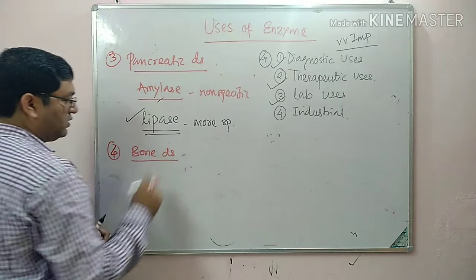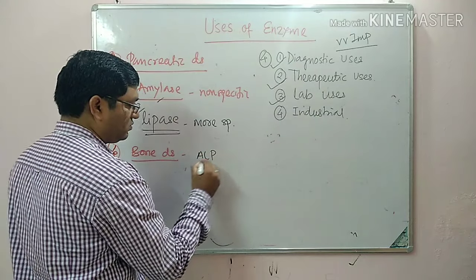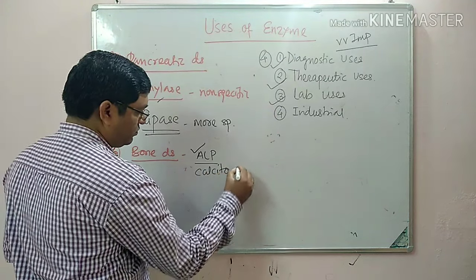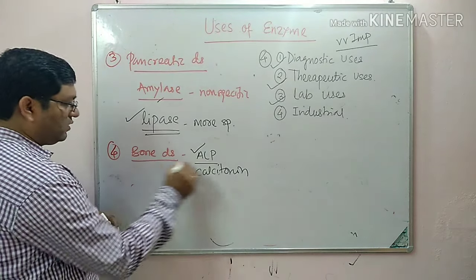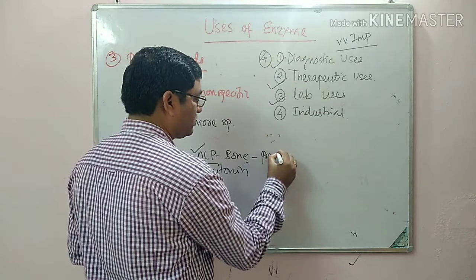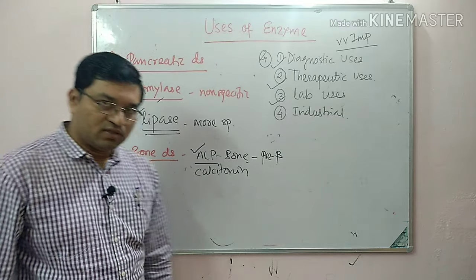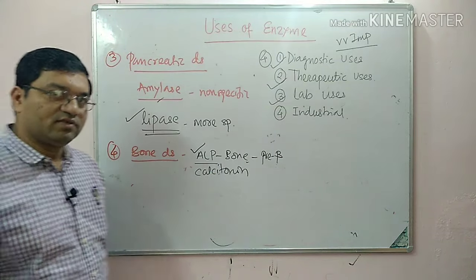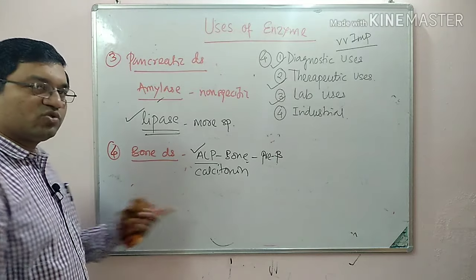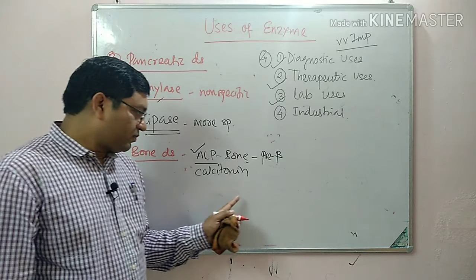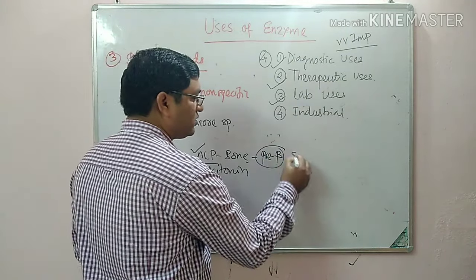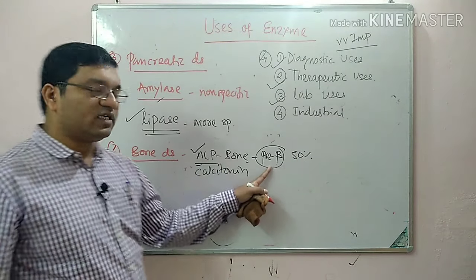The next category is bone diseases. Alkaline phosphatase level is indicative of osteoblastic activity. The bone isoenzyme of alkaline phosphatase — known as pre-beta — is important in the diagnosis of bone diseases. There are six isoenzymes of alkaline phosphatase, and the pre-beta concentration is about 50 percent of total alkaline phosphatase activity; its activity increases in bone diseases.